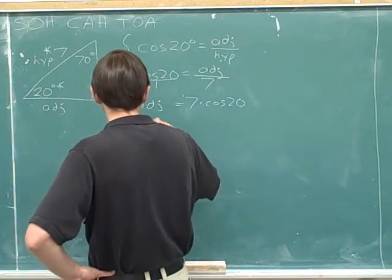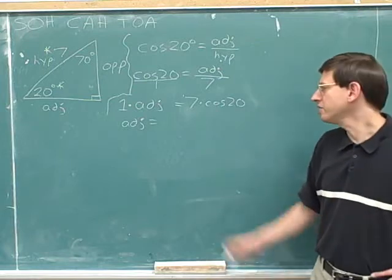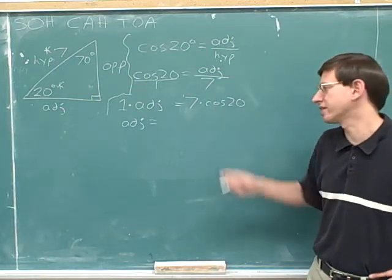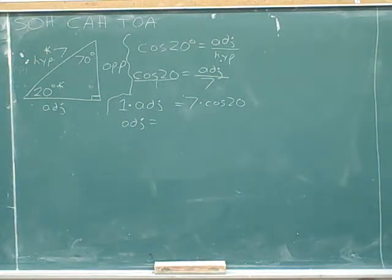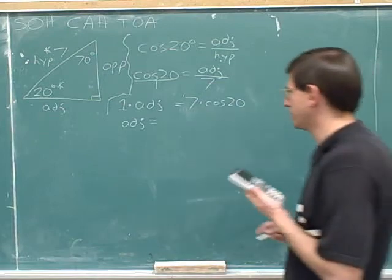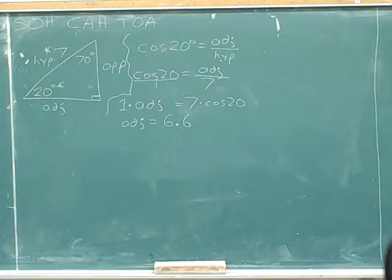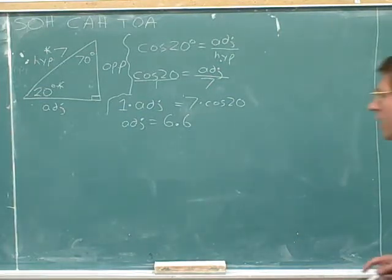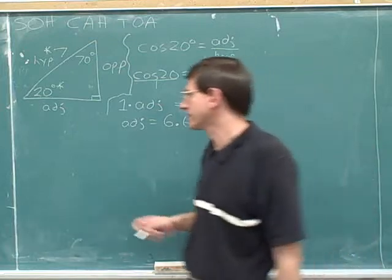You can do that in one step. You don't have to find the cosine first and then multiply. 7 times the cosine of 20 is 6.6. Approximately. So the adjacent side has a length of 6.6.